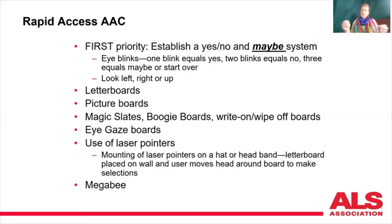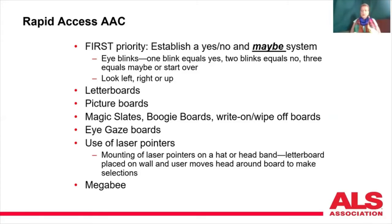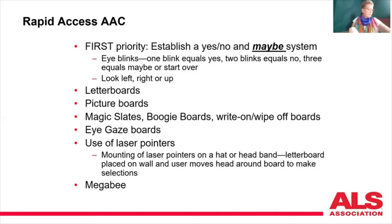You can use boogie boards — electronic LCD boards. You write on them and press a button and the writing disappears. They're available on Amazon, or you can get wipe-off boards at Walmart or Target. There are also eye gaze boards, laser pointers, and an electronic device called a Megabee, which is an electronic letter board system.